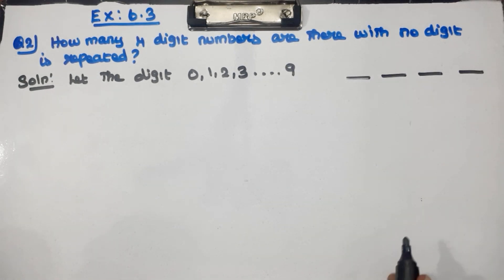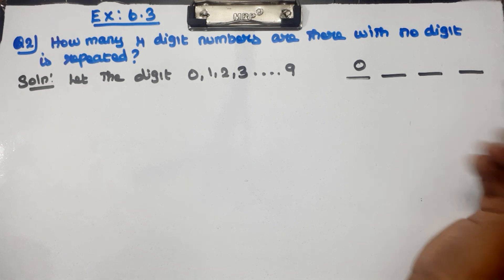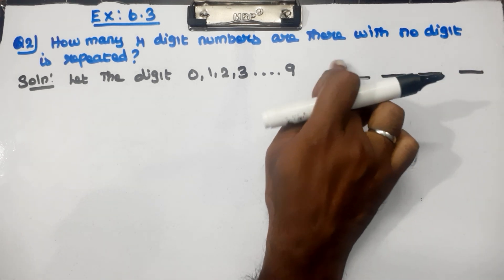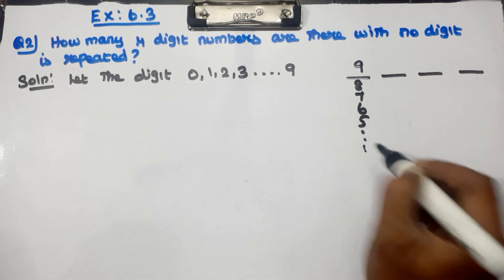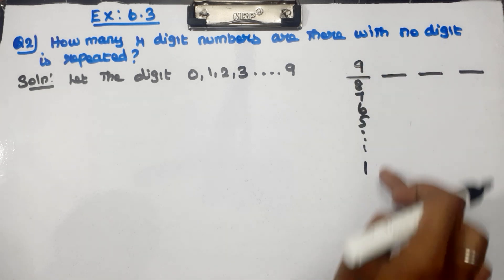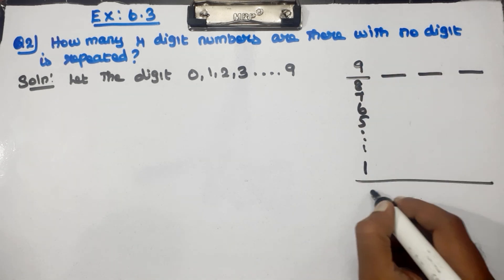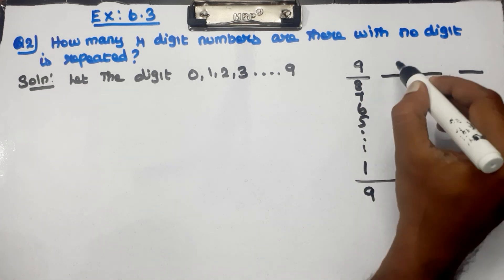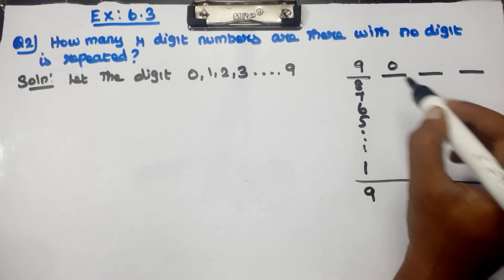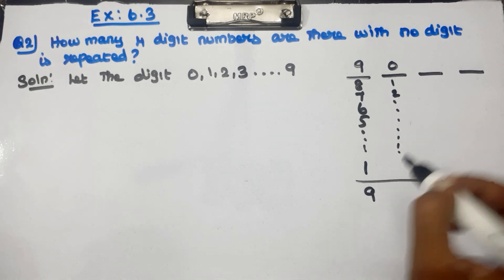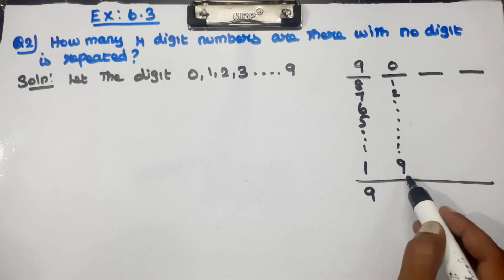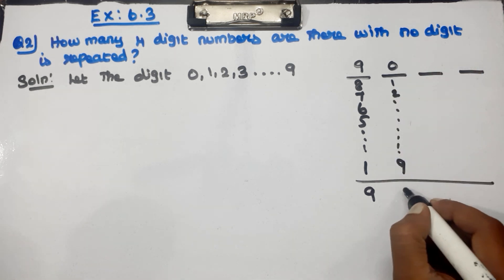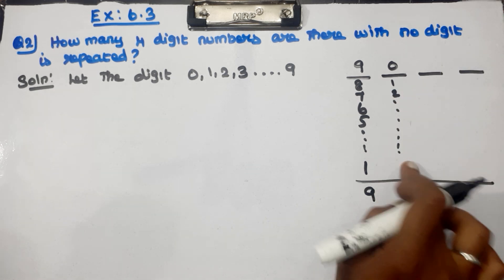For the first digit position, how many choices do we have? The count is 9, so the first digit has 9 options. For the second digit, since one digit is already used, you have 8 remaining choices. Then for the third digit, you can use 0, 1, 2, 3, up to 9 minus used ones — this will interchange as we go.